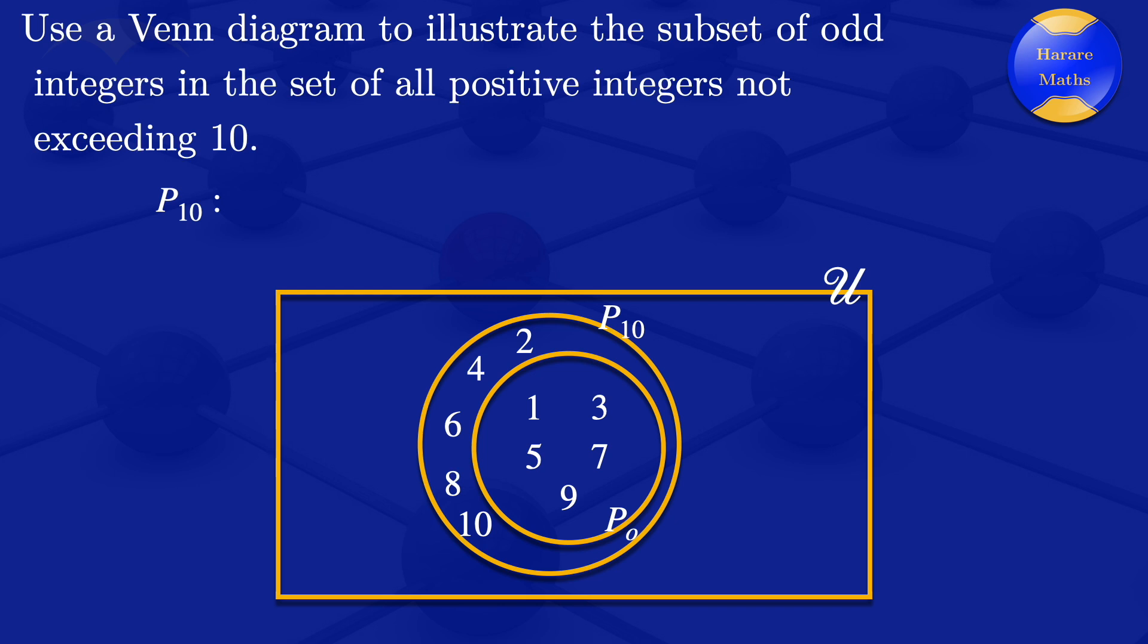So that's the Venn diagram representation of the subset of odd integers in the set of positive integers.